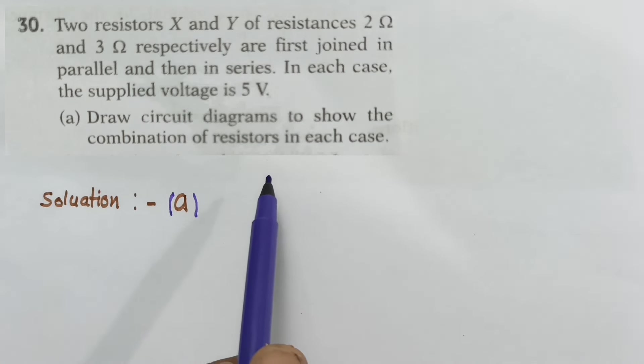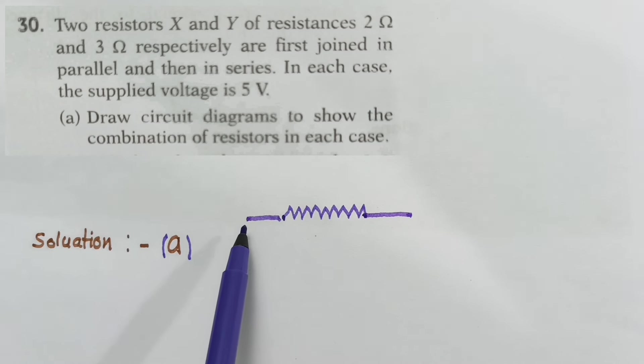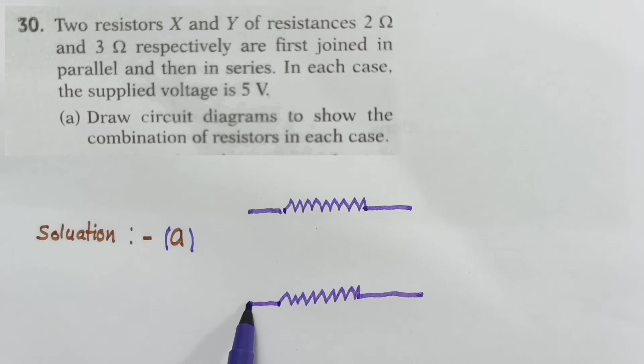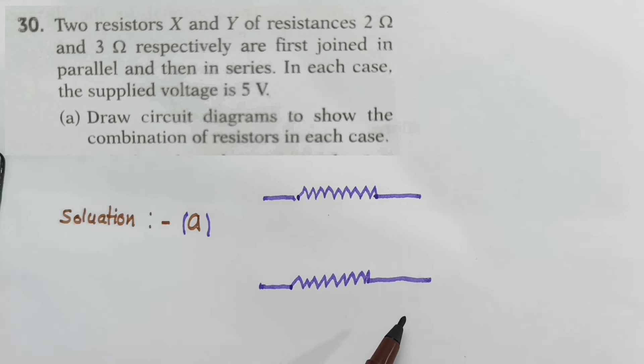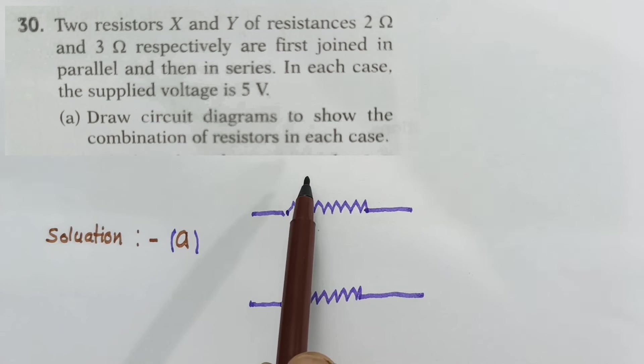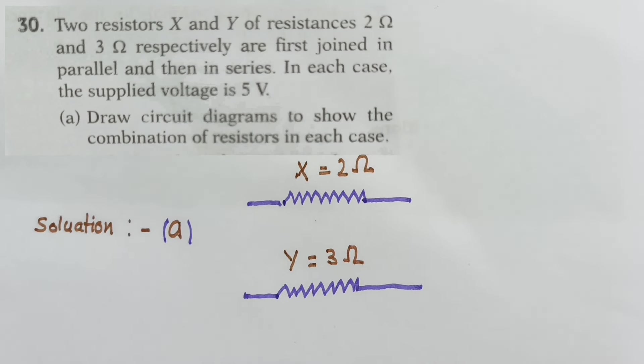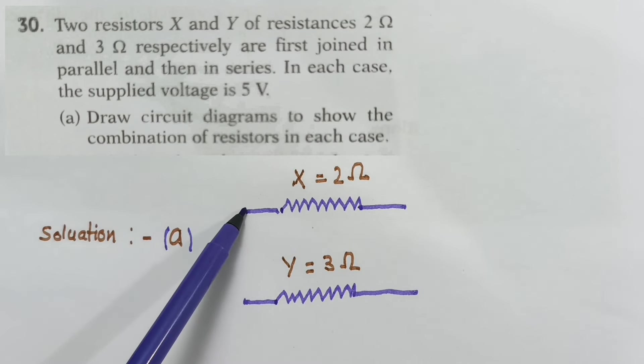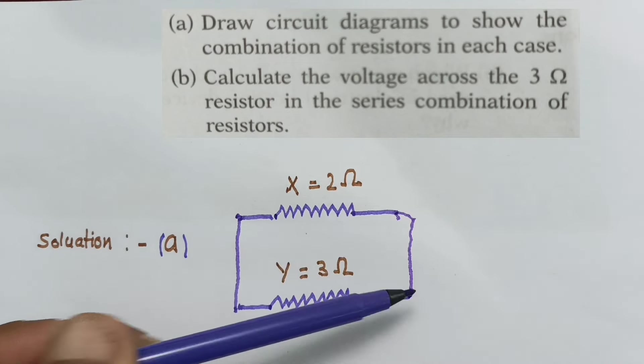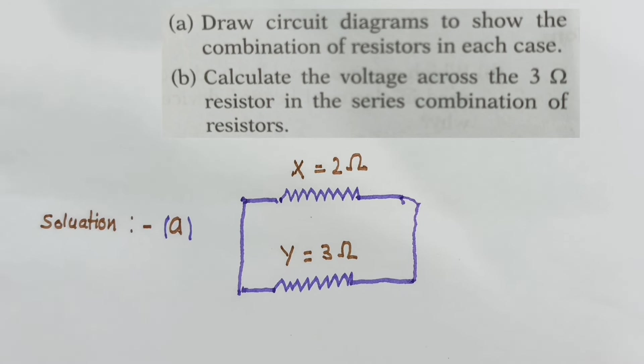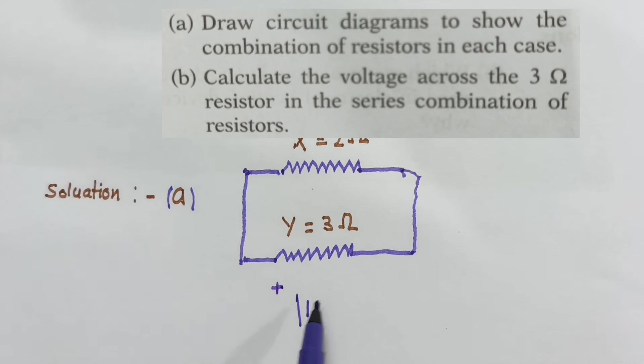For the parallel combination, we have X, which is the resistor of 2 ohm, and Y which is 3 ohm. These are the two resistances. Now we can connect these two in parallel lines, and we have 5 volts of supply, so we have 5 volts of supply plus and minus.